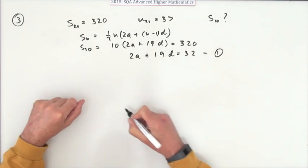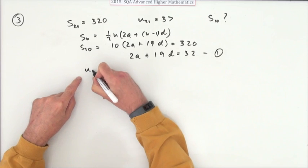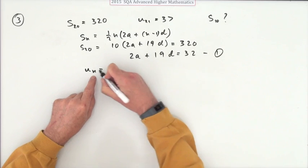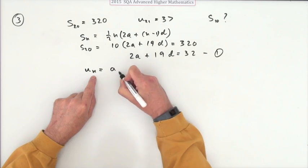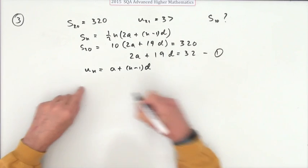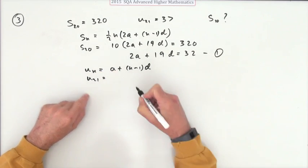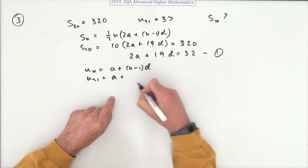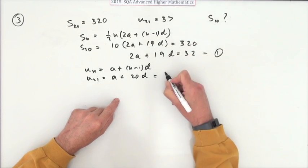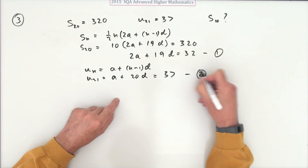Now here's another bit of information. I also know the formula for the general term in an arithmetic series, and that would be a, the first term, plus n minus 1 times the common difference. So if I know u₂₁, that'll be a plus one less than that is 20, and it comes to 37. So there's another equation.